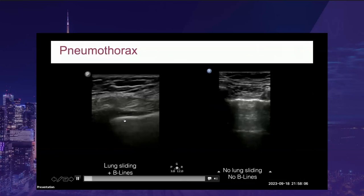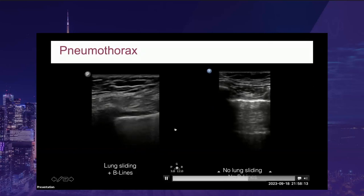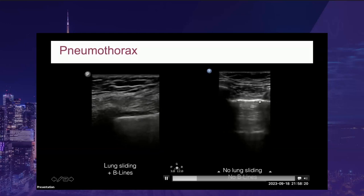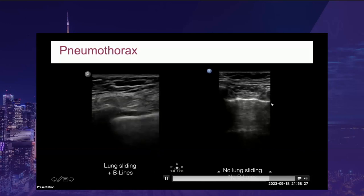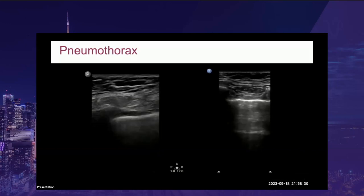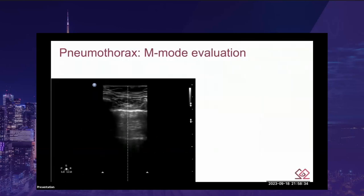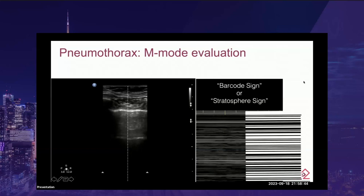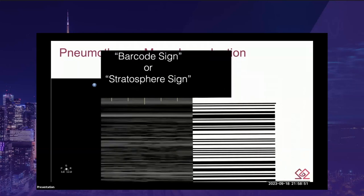In contrast, this patient has no lung sliding and no B-lines visible. If you put M-mode over this image, you would see the same static appearance below the pleural line as you see in the chest wall — what we call a barcode sign or stratosphere sign. This is significant for a lack of lung sliding and something you should confirm anytime you're worried about absent lung sliding.